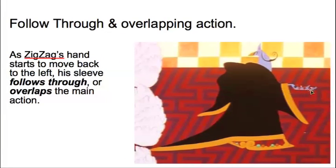The next thing that happens is, as Zigzag's hand starts to move backwards, the sleeve will follow through or overlap the main action. Because remember that the timing on the sleeve is not going to be the same as the timing on the hand. The sleeve is going to happen four to six frames later. Everything is going to be delayed because this is soft, loose material. So it's going to follow through or overlap the main action of the hand.